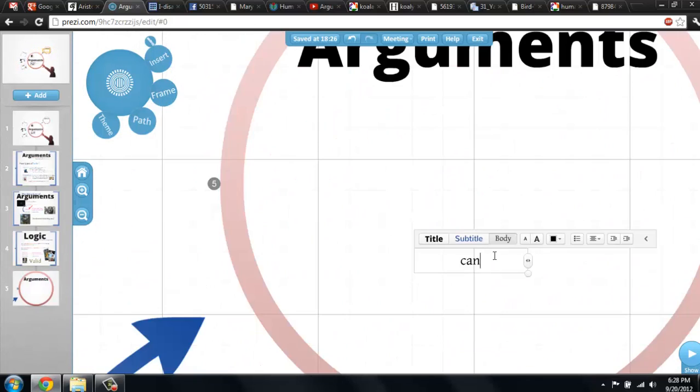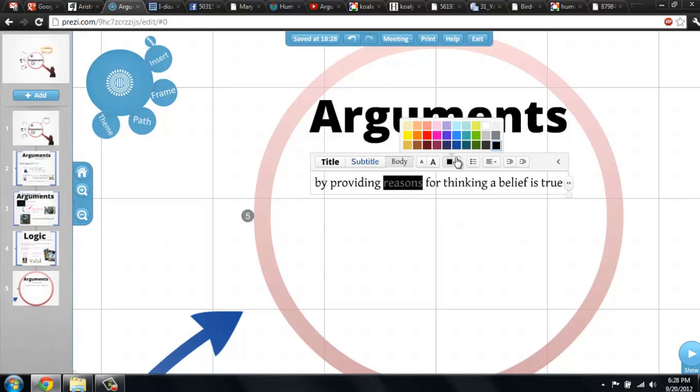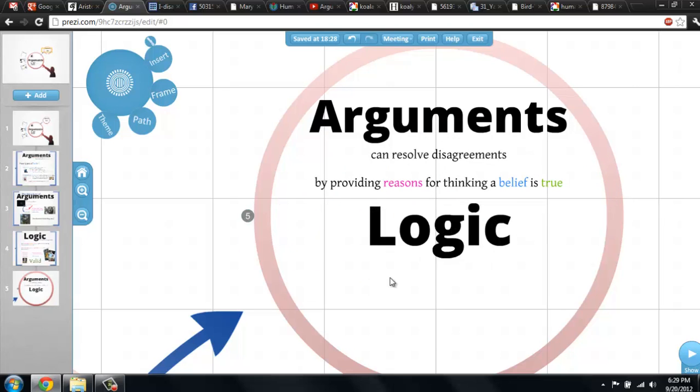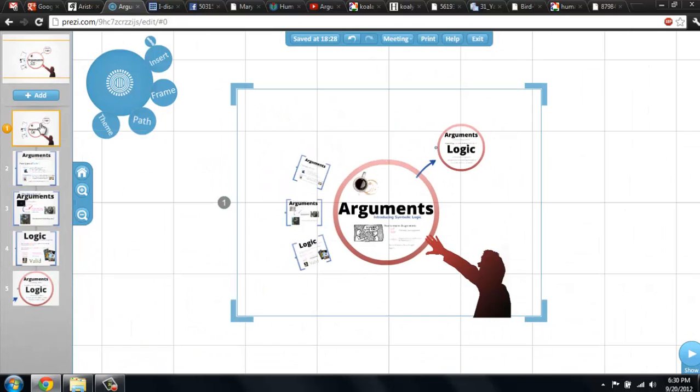In this video, we discovered how arguments can resolve disagreements by providing reasons for thinking a belief is true. We also said that logic is the science of arguments, which generates new knowledge by studying the relations between our beliefs. Next time, we'll look at some of the syllogistic forms that Aristotle uses and what makes them valid.